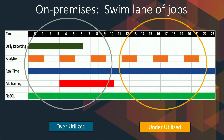Looking at the swim lane diagram here, this is very typical of every workload we see on-premises. The top portion showing 0 to 23 represents the entire day's workload. Some real-time jobs are running 24/7, some NoSQL applications are also running 24/7, while some analytics jobs come and go, and some daily reporting jobs only run for six hours. At the beginning of the day, your cluster is overutilized; at the end of the day, it's underutilized because you're stuck with a fixed number of nodes. So how can you segment clusters based on usage and usage patterns?